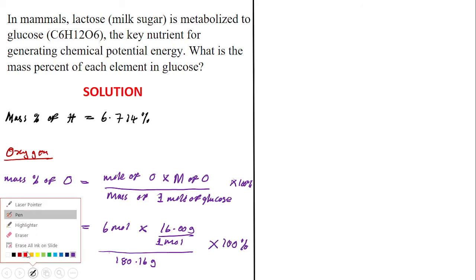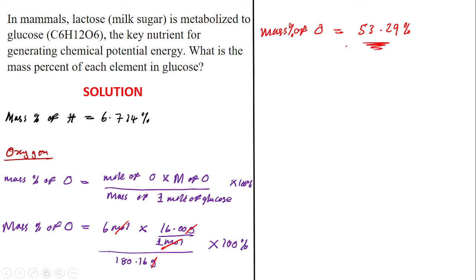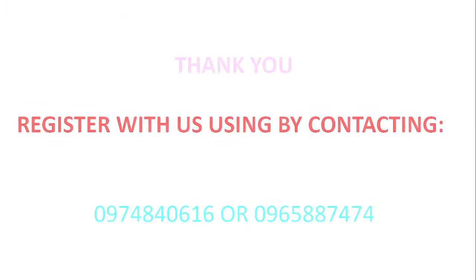Cancelling the moles and grams, and plugging into the calculator: the mass percentage of oxygen = 53.29 percent. Ladies and gentlemen, those are the solutions for these three questions. Thank you very much for joining me — this was Dr. Possibility from Excel Academy.